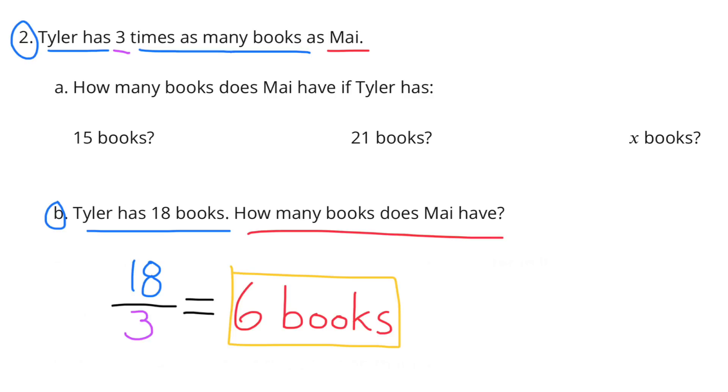B. Tyler has 18 books. How many books does Mai have? Well, again, since Tyler has 3 times as many books as Mai, you'd figure it out by dividing 18 by 3. And that would be 6. So when Tyler has 18 books, Mai would have 6 books.